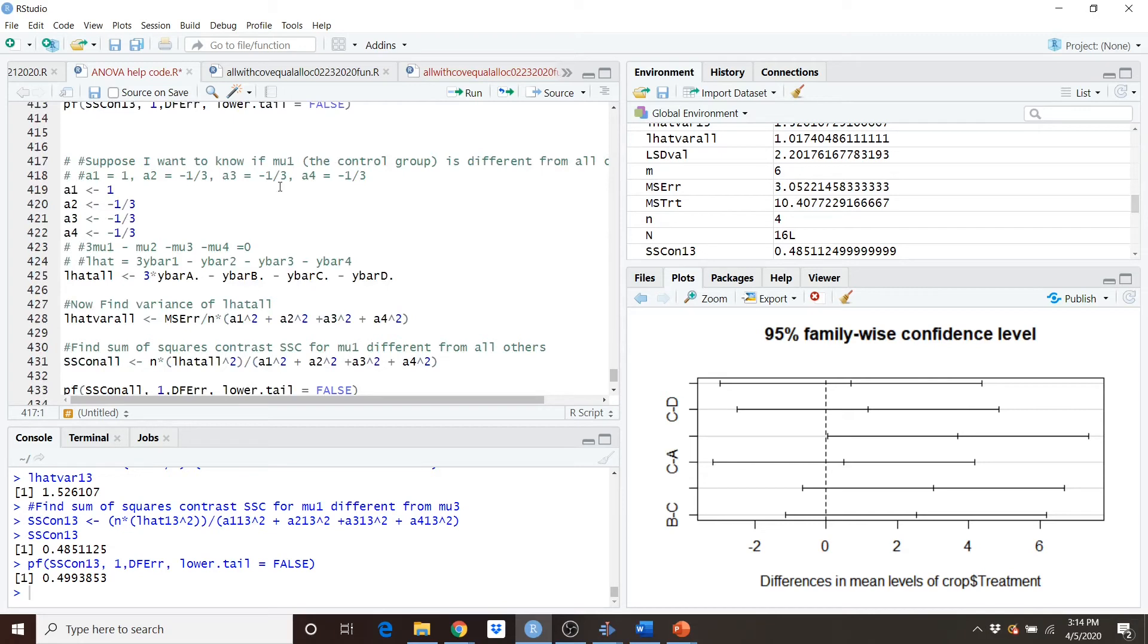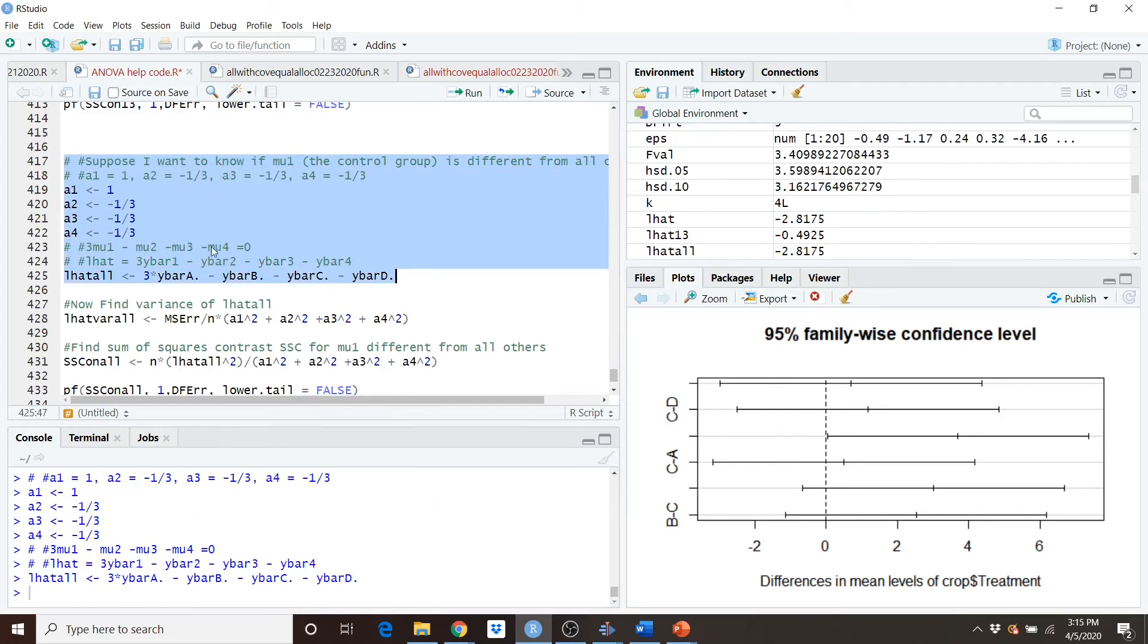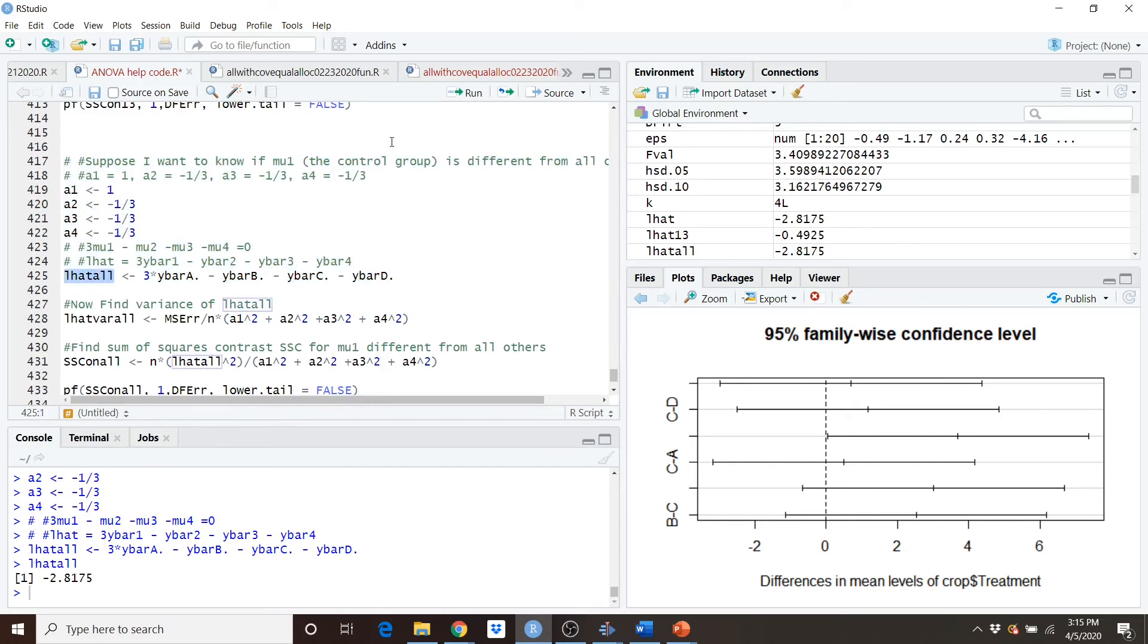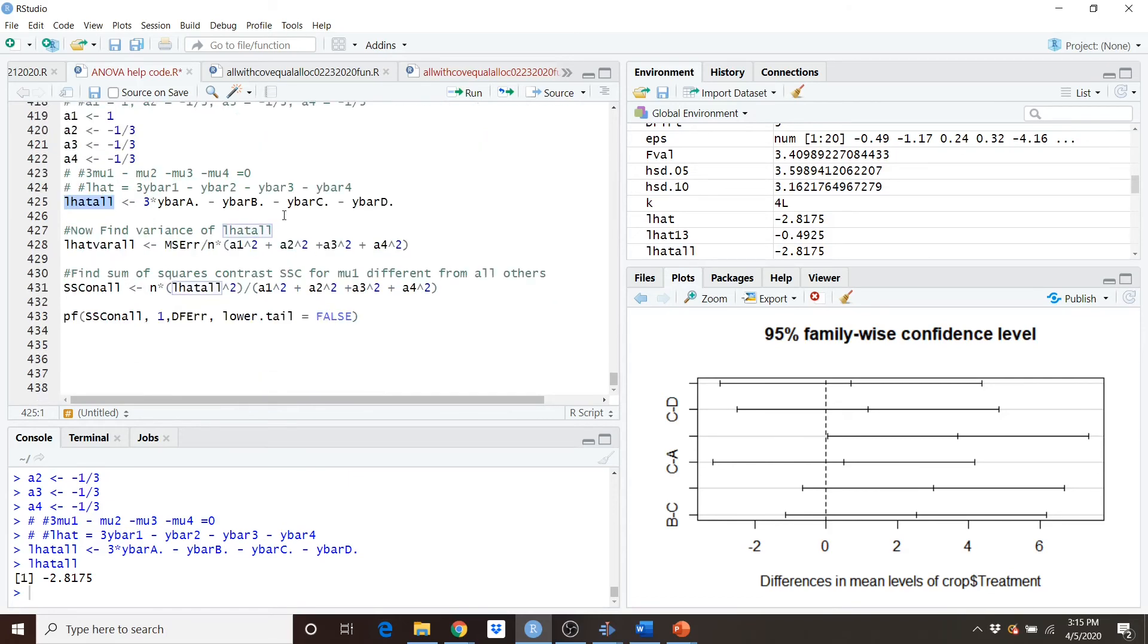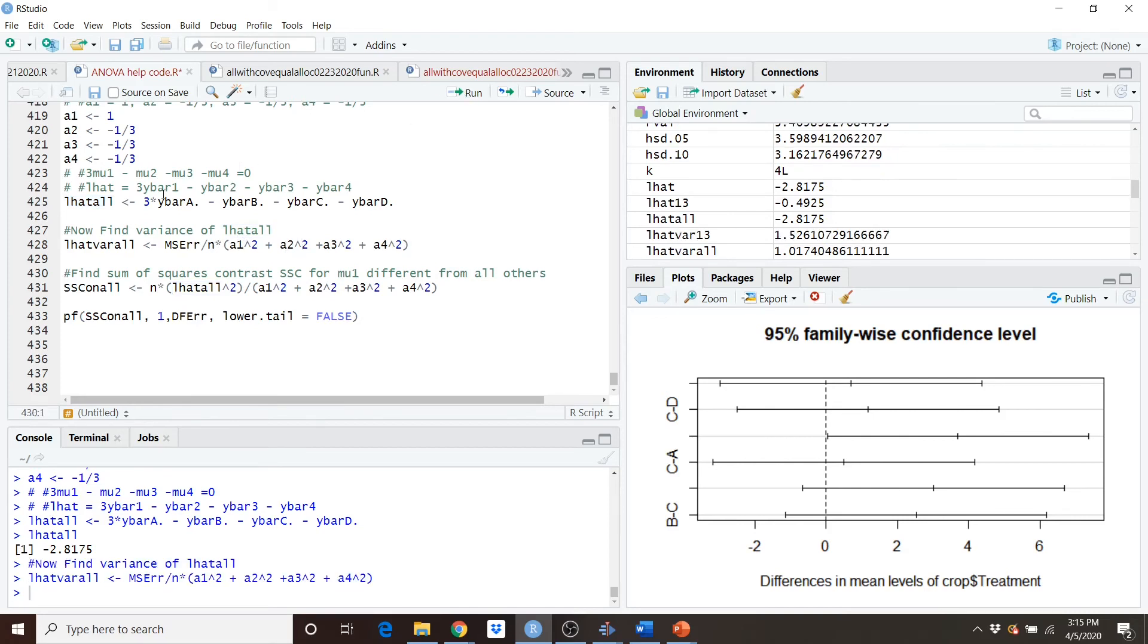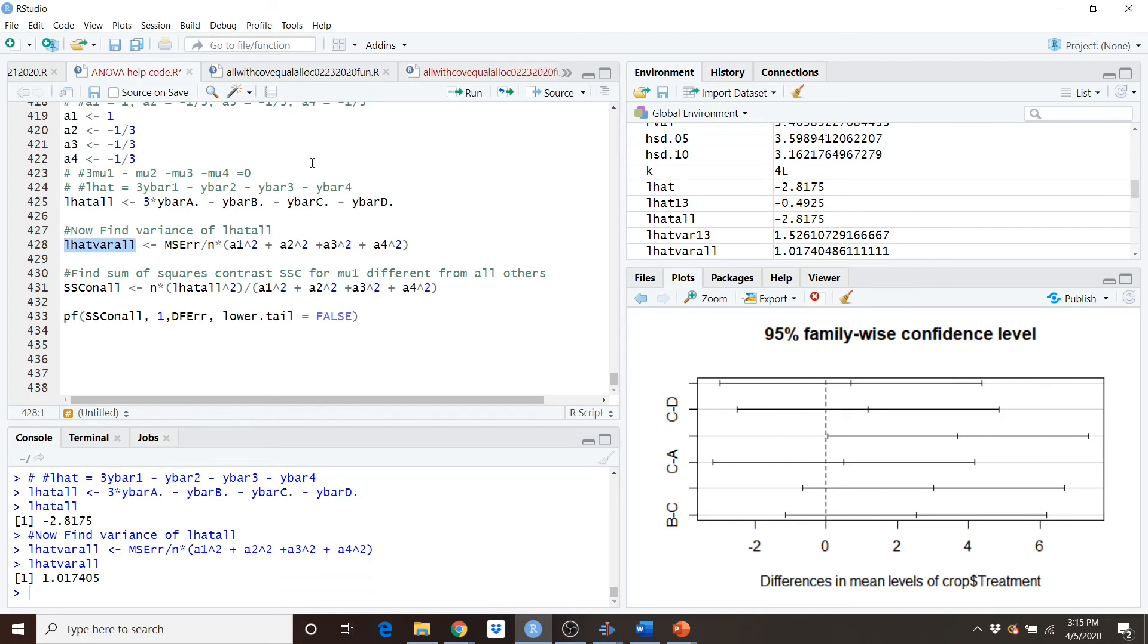Well now suppose I would like to determine if my control group mu1 is different from all other groups. So I'm going to set a1 equal to 1 and then a2, a3, and a4 will be negative one third respectively. And I'll run this. And then I'm calling this l hat all because I'm testing the control against all others. And l hat all is negative 2.8175. Now let's find the variance for l hat all. Mean square error divided by n times a1 squared plus a2 squared plus a3 squared plus a4 squared. And we get l hat variance for all of 1.0174.